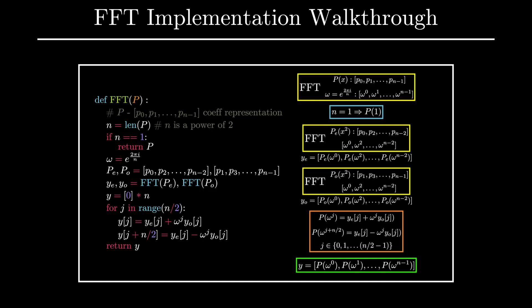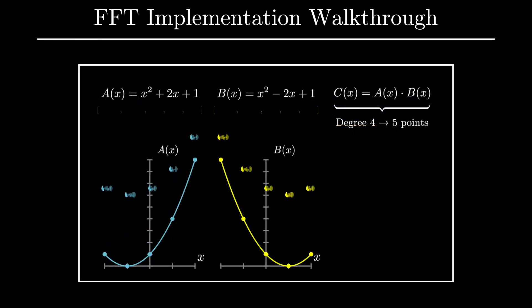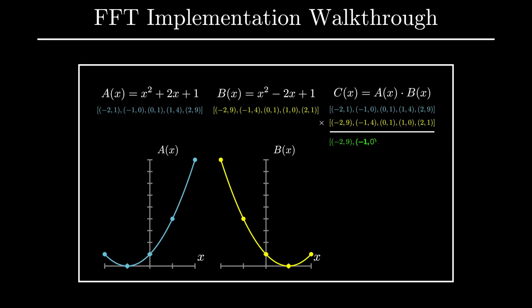To give a super quick recap of the main ideas of the first video, we motivated the idea of the FFT through polynomial multiplication. The key idea there is that polynomial multiplication is much faster when we use a point value representation of polynomials.